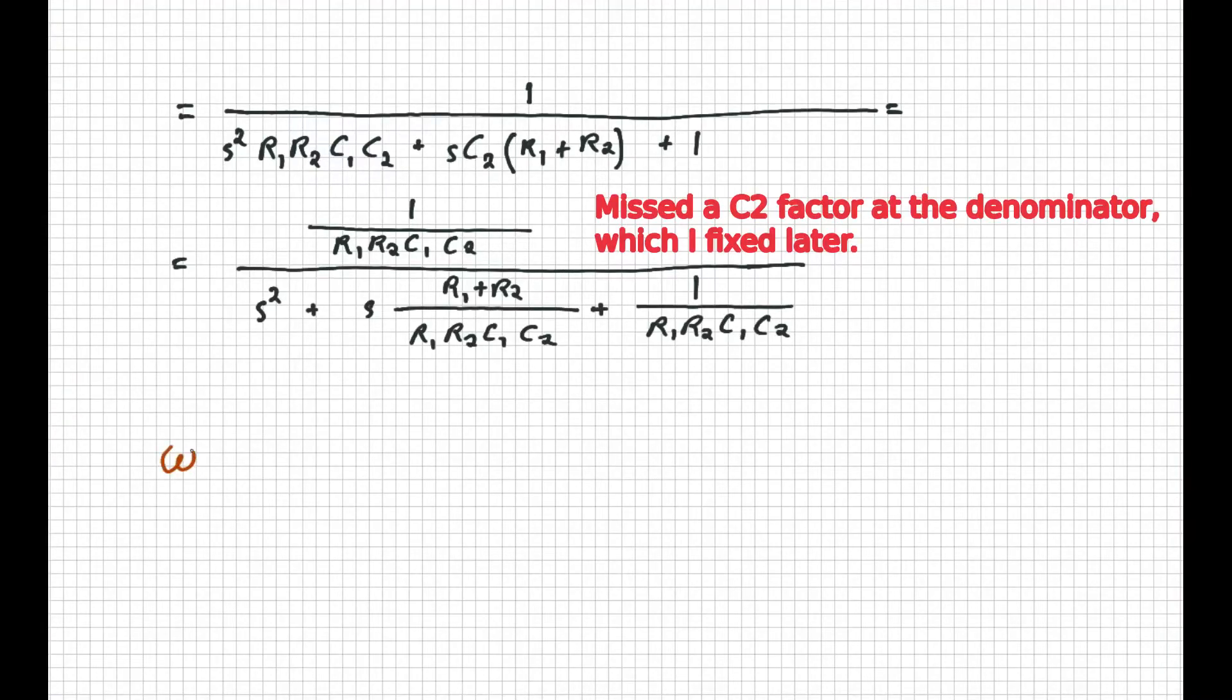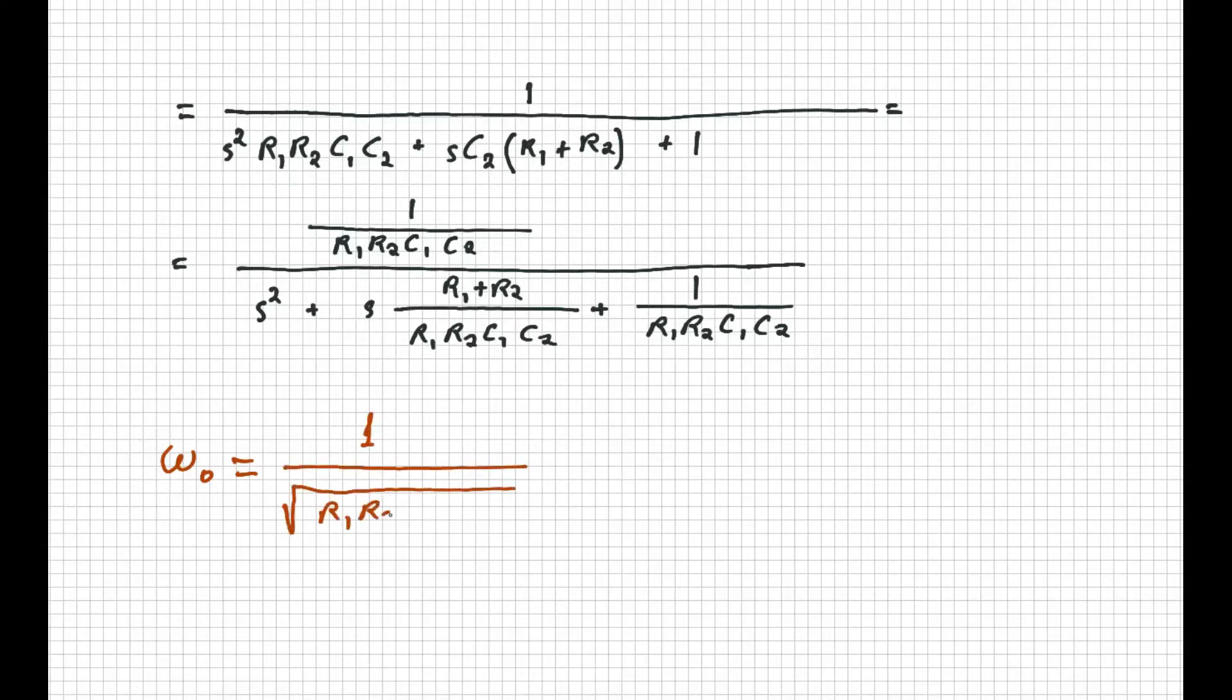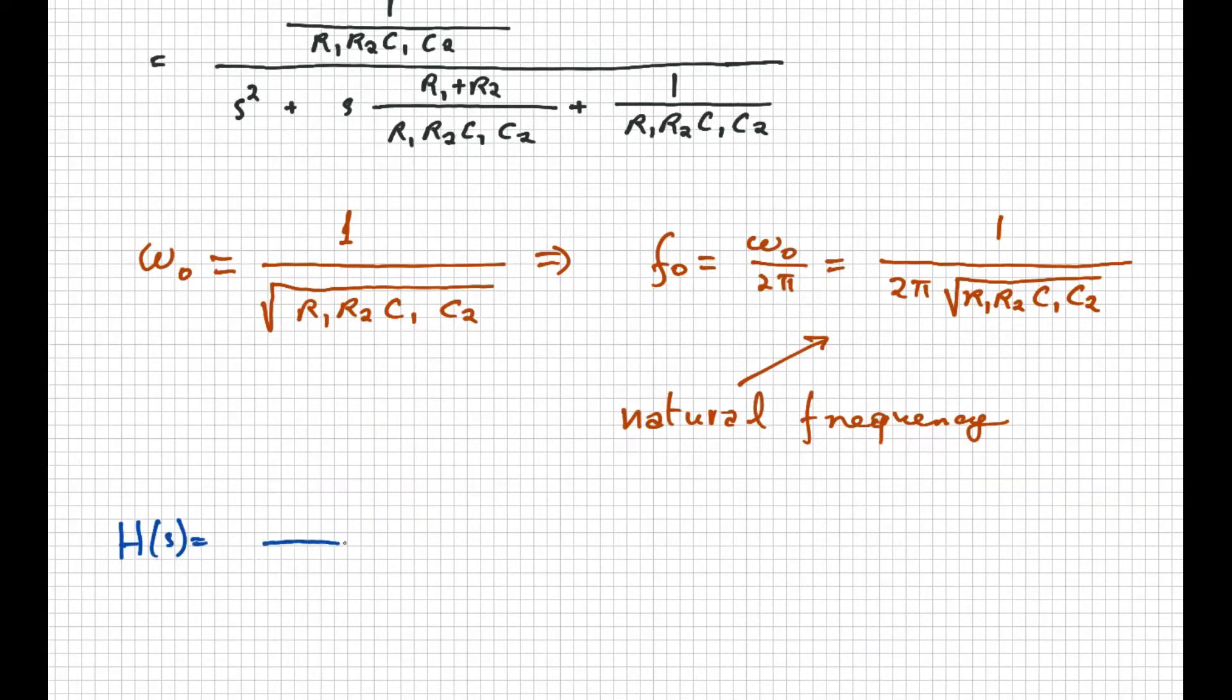Let me now define ω0 as 1 over square root of R1, R2, C1, and C2, and F0 as ω0 over 2π, which we call the natural frequency. Now we can write the transfer function this other way.